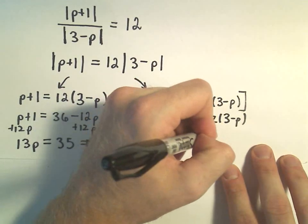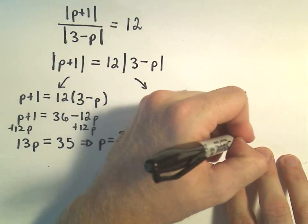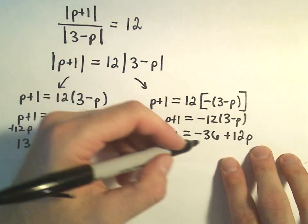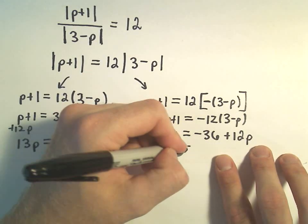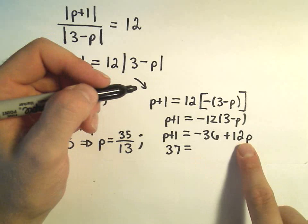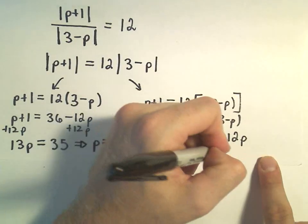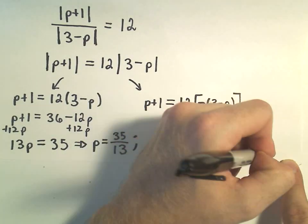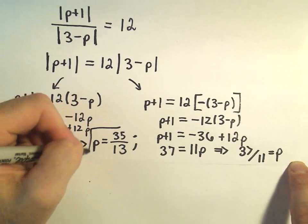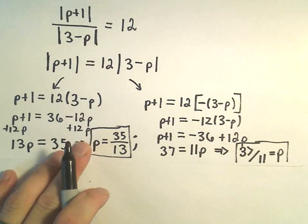Negative 12 and 3 is negative 36. Negative 12 and negative p is positive 12p. And the same thing. So let's add 36 to both sides. That will give me positive 37. I'm going to subtract 1p from both sides. That will give me 11p. And now, if I divide both sides by 11, I'll get 37 divided by 11 equals p as my second solution to this absolute value equation.